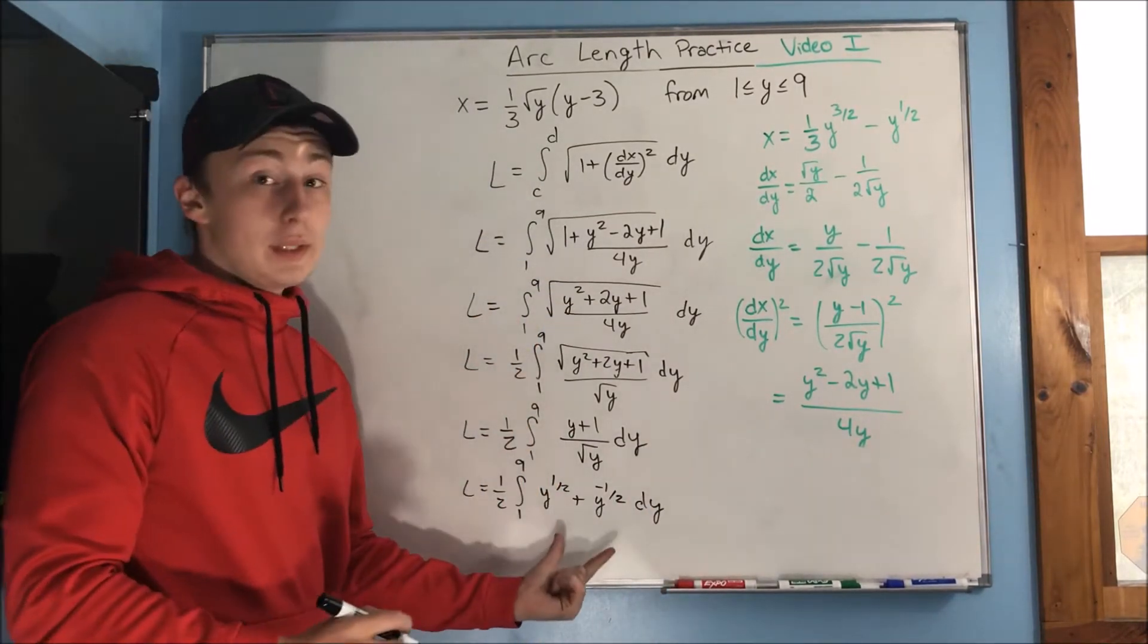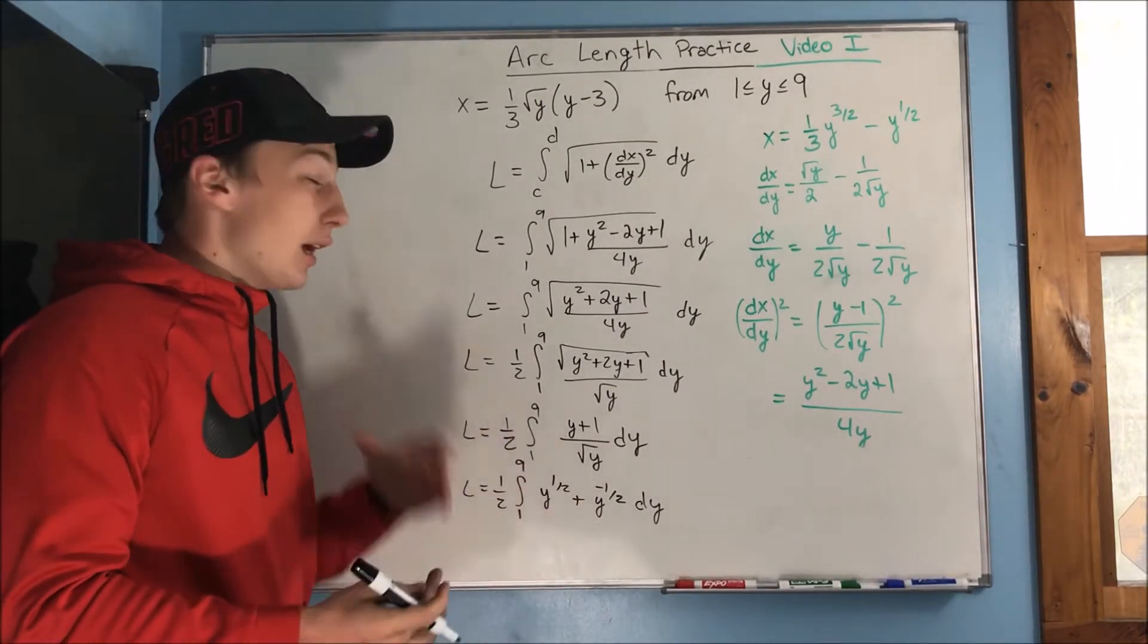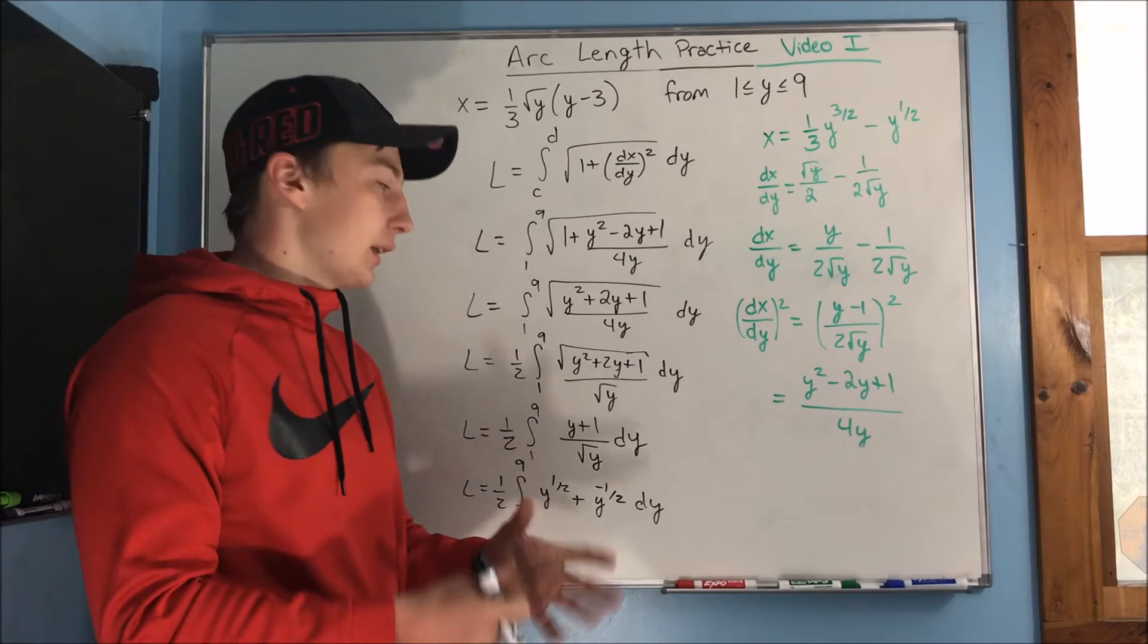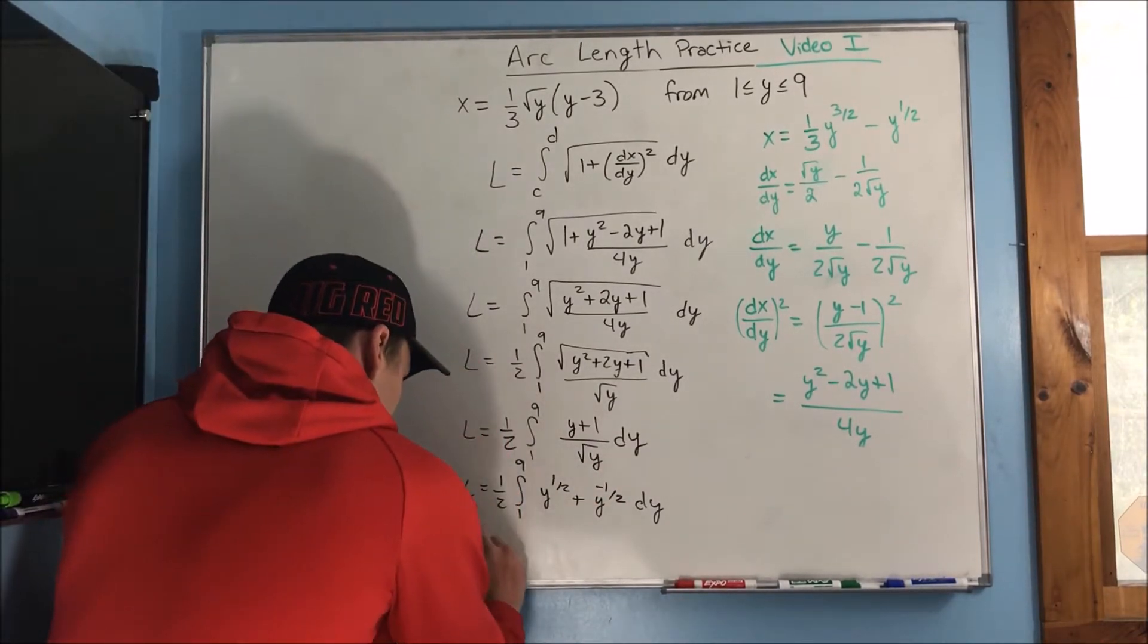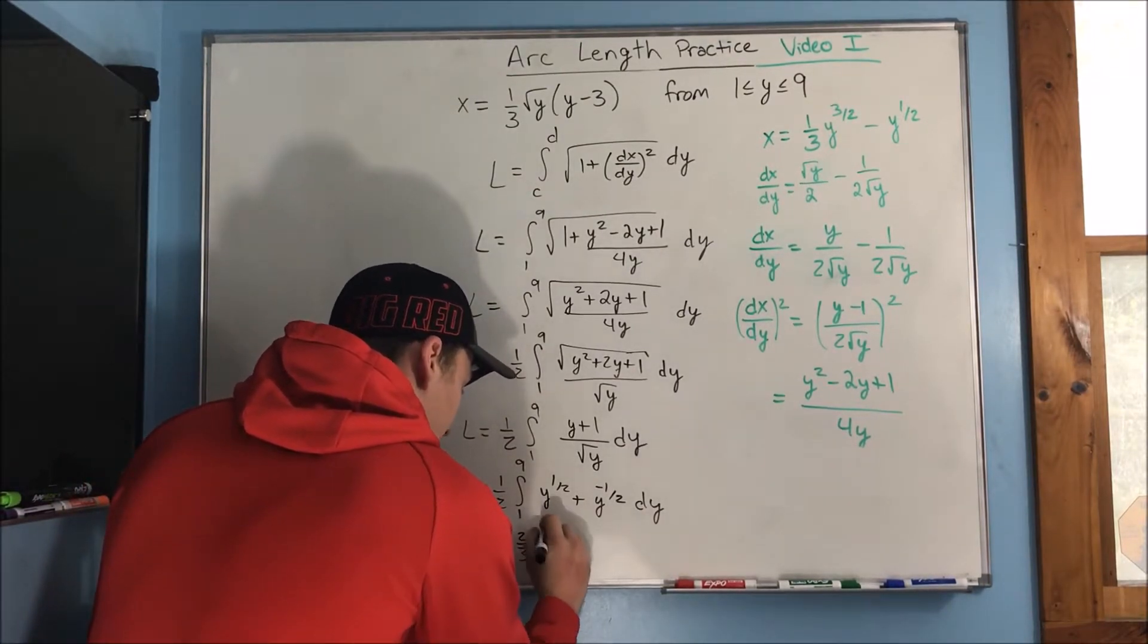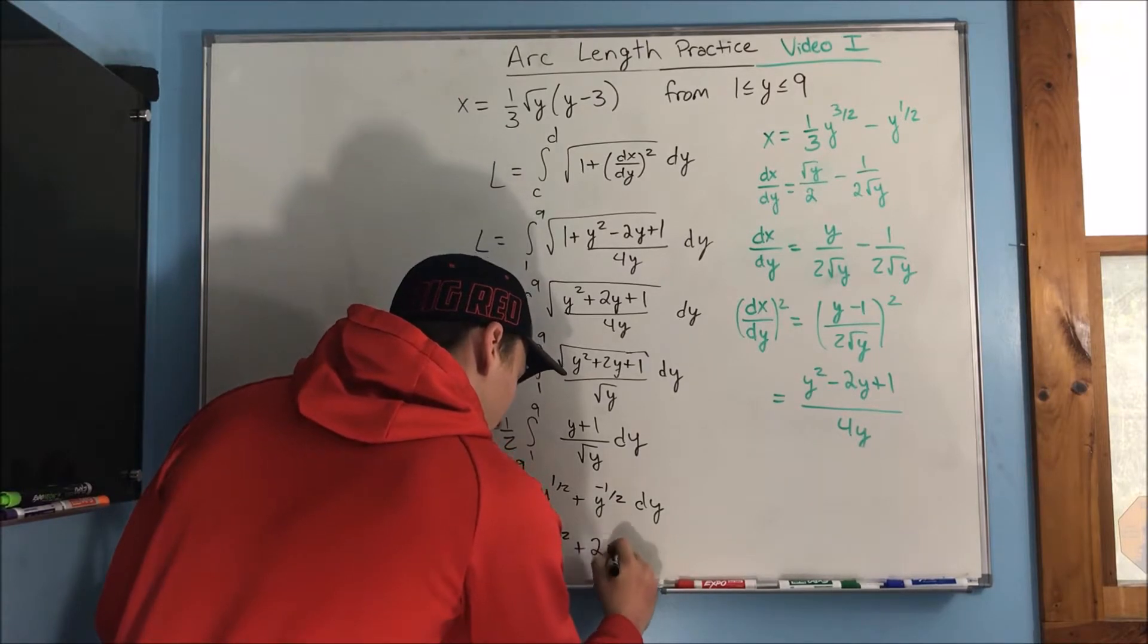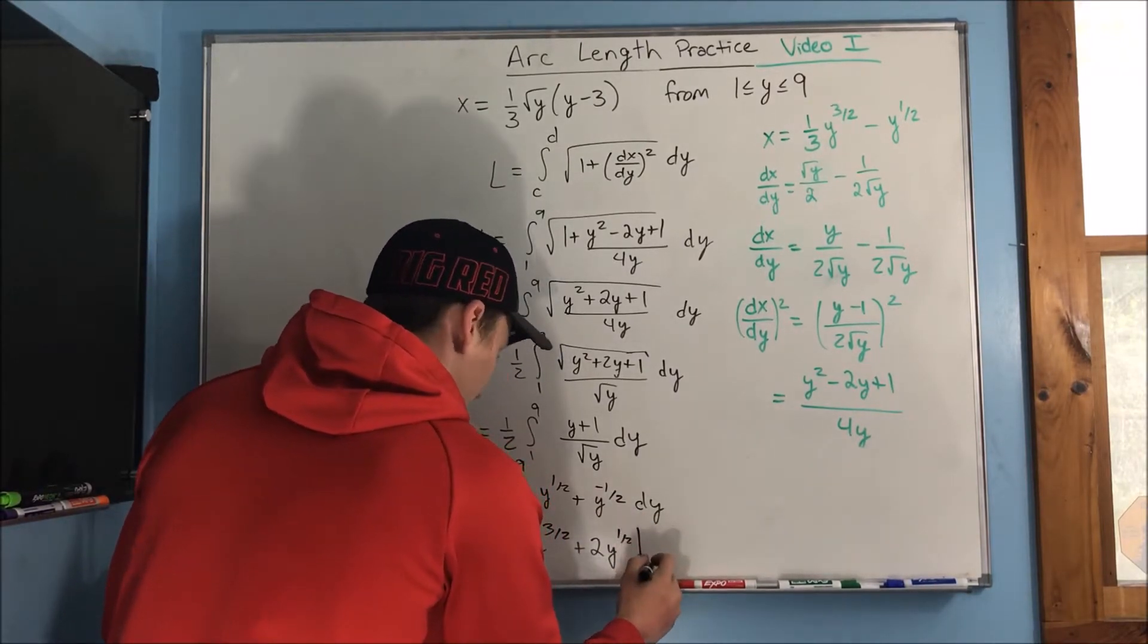And now, this is a super easy integral. But there was a lot of finding common denominators and other steps like that before we even got to this nice part. So, it's very, it gets very tedious. You've got to kind of see a lot of things. But anyways, we can integrate this to get 1 half times 2 thirds y to the 3 halves. This will be plus 2 y to the 1 half, and we'll be evaluating that from 1 to 9.